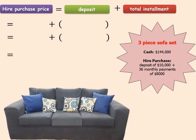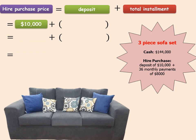We are given the cash price — we'll talk about that later — and we're given the hire purchase details. It says we're going to make a deposit of $10,000, so right away we know our deposit is $10,000. Now we need to find the total installment: it says deposit plus 36 monthly installments of $8,000. So our number of installments is 36 and our installment value is $8,000, meaning we're paying $8,000 every month.